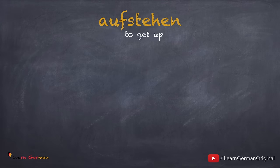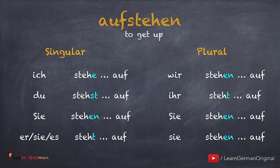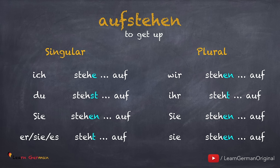Now let's see how to conjugate such verbs. Remember that in trennbare Verben the prefix is at the end and the verb is conjugated normally. In this case 'stehen' is a regular verb so we conjugate it like a regular verb: Ich stehe auf, du stehst auf, Sie stehen auf, er/sie/es steht auf, wir stehen auf, ihr steht auf, sie/Sie stehen auf. If you want to revise verb conjugation, you can go through our lessons 14 and 15.